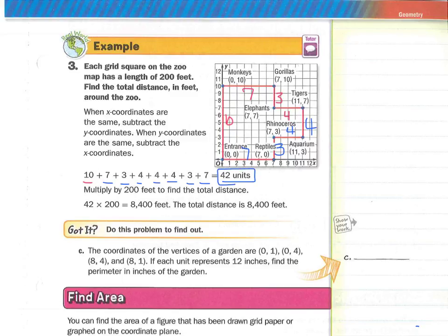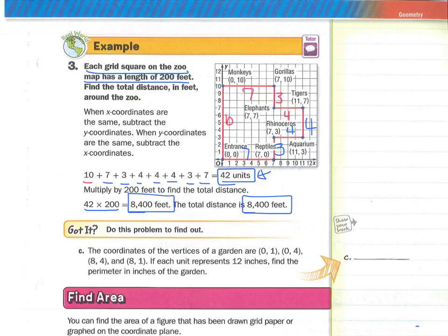This isn't the final answer though, because they said each square on the zoo map has a length of 200 feet. Each square is a unit, so we need to multiply 42 times 200, which equals 8,400 feet. The total distance is 8,400 feet.